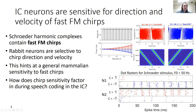Recent recordings suggest that IC neurons are highly sensitive to the direction and velocity of fast FM chirps. In our lab, we make extracellular recordings of rabbit ICC neurons responding to different sound stimuli, and one of these stimuli are the Schroeder harmonic complexes.